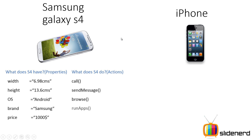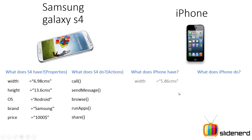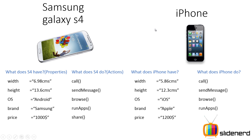What actions does your S4 perform? Call, send message, browse, run apps, share — and there are probably many other actions. Now if you focus on the iPhone, you'll notice it also has certain properties and performs certain actions. The common properties on both sides are: width, height, OS, brand, price, and the actions are call, send message, browse, and so on.